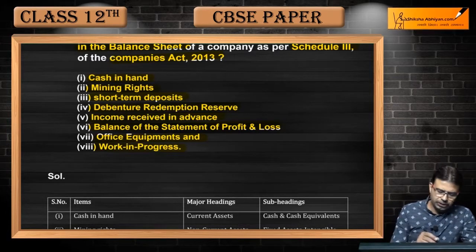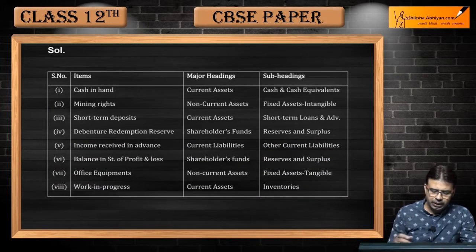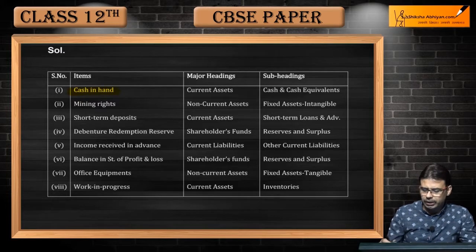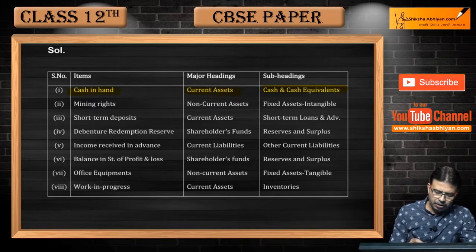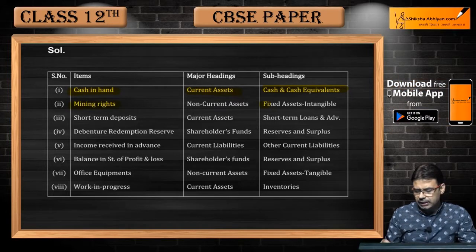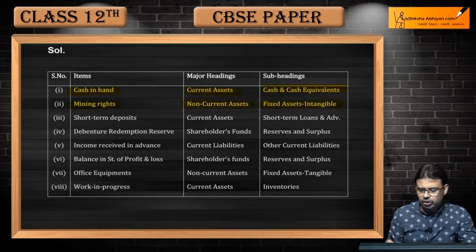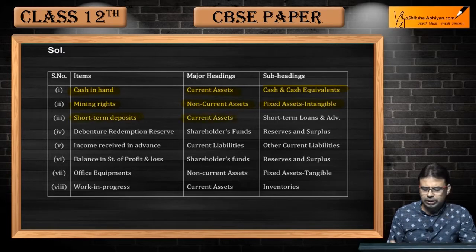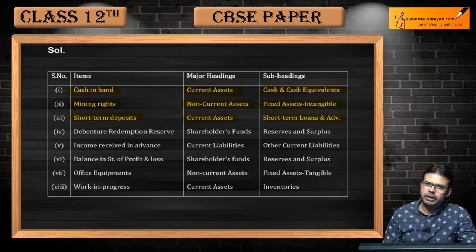Cash in hand is part of cash and cash equivalents, which is a subheading under current assets. Mining rights are fixed assets — specifically intangible fixed assets — because rights are intangible. So mining rights go under non-current assets. Short-term deposits are part of current assets, placed under the subheading short-term loans and advances.